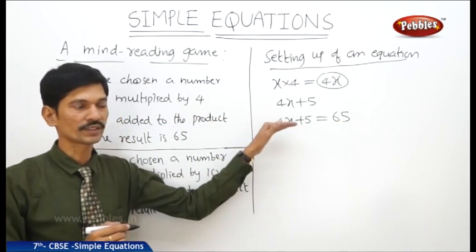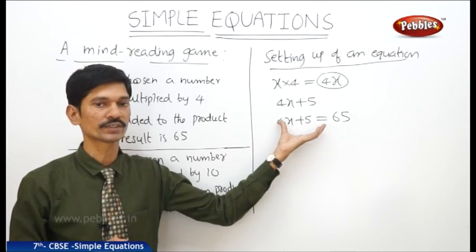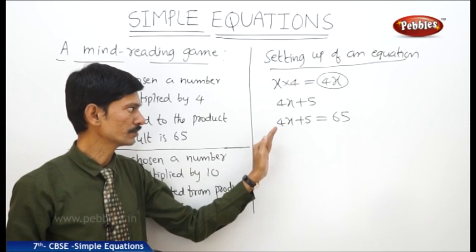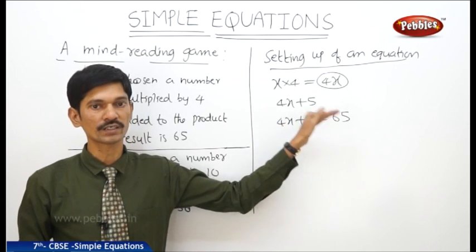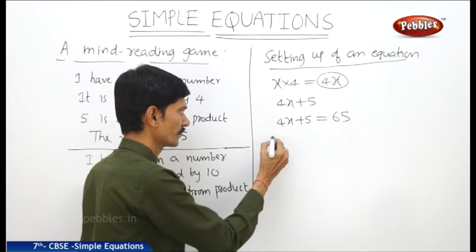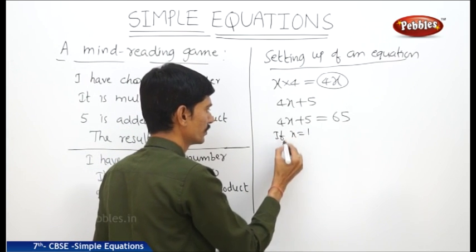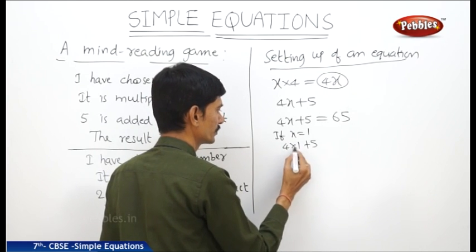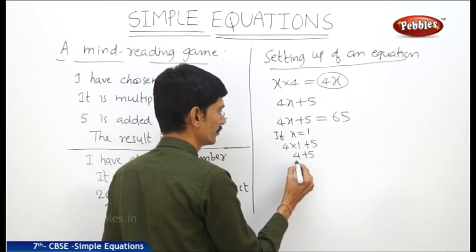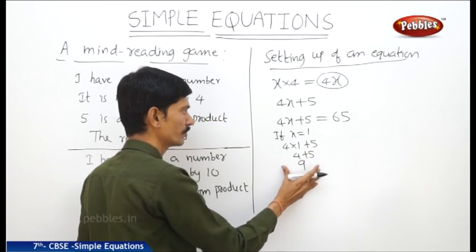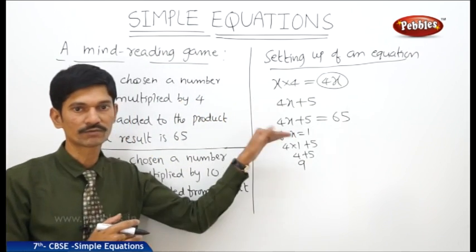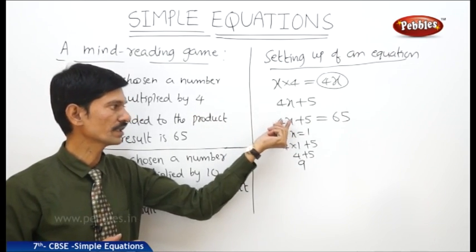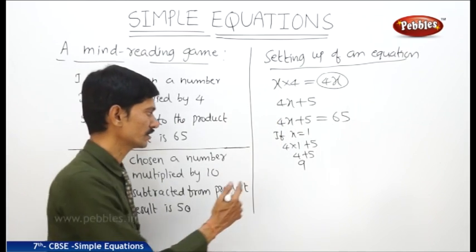By substituting different values of x in the equation, we check whether LHS and RHS are equal. For example, if x equals 1, then 4 into 1 plus 5 equals 4 plus 5 equals 9. We do not get LHS and RHS equal. By the substitution method, we can find the value of the unknown number x.